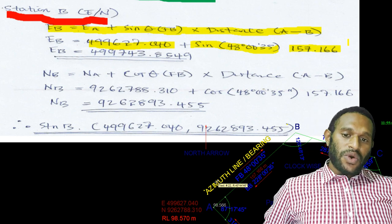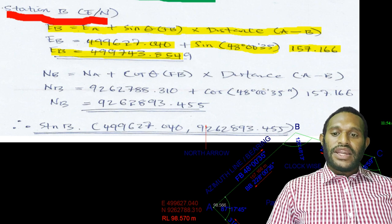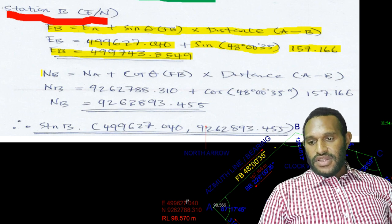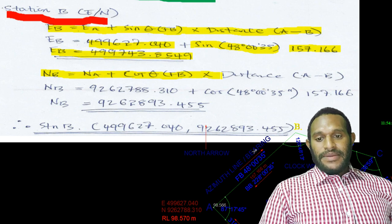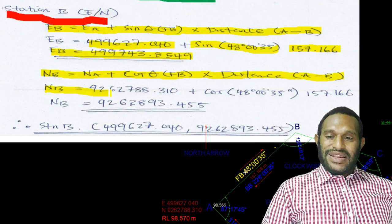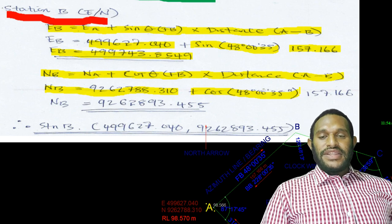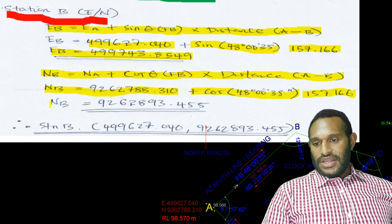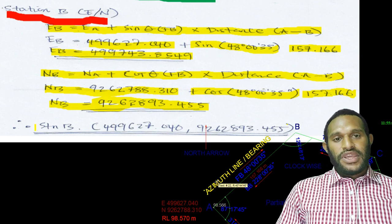The distance from A to B is 157.166 meters, giving us the easting of B as 499743.8549. For the northings calculation: northings of B equals northings of A, plus cosine of the forward bearing, multiplied by the distance of A to B. That is 9262788.310, plus cosine(48° 00' 35"), multiplied by 157.166 meters.